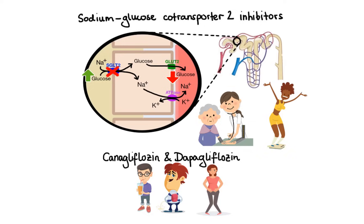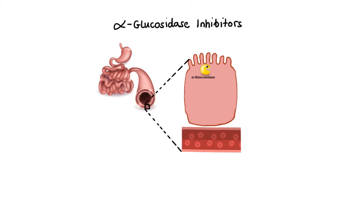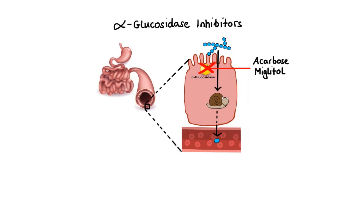The final class of oral antidiabetic agents is alpha-glucosidase inhibitors. Alpha-glucosidase is an enzyme located in the intestinal brush border responsible for breaking down carbohydrates into simple sugars such as glucose. When an alpha-glucosidase inhibitor blocks this enzyme, absorption of glucose is delayed, resulting in lower postprandial glucose levels. Drugs in this class include acarbose and miglitol. A major disadvantage of these agents is significant gastrointestinal side effects, including abdominal cramps, bloating, flatulence, and diarrhea.